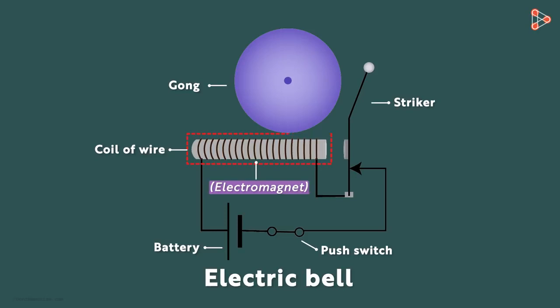This electromagnet then attracts this soft iron towards it. And in the process, the striker strikes the gong and the sound is produced.